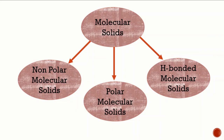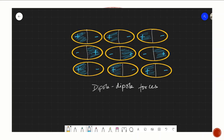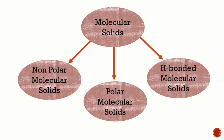Polar molecular solids are those crystalline solids in which the constituent particles are polar molecules like HCl, sulfur dioxide, etc. The forces holding these molecules together are dipole-dipole forces of attraction. They are soft, they are non-conductors of electricity, and their melting and boiling points are comparatively higher than non-polar molecular solids. They also exist as gases or liquids at room temperature.